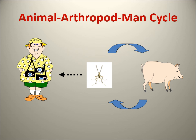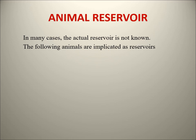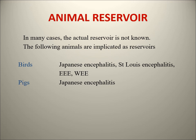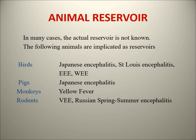Animal reservoirs - in many cases we don't know the actual reservoir, but a few have been identified. Birds serve as the flying reservoir for Japanese Encephalitis. The reservoir is where the virus stays in a reserve form when the transmission cycle is not active. When the mosquito breeding season comes, vectors take the virus from the reservoir and the cycle starts again. The reservoir hosts carry no clinical symptoms but maintain the virus. Birds and pigs are both reservoirs for Japanese Encephalitis - pigs are very important amplifiers. Monkeys are reservoirs for Yellow Fever, and rodents for Russian Spring-Summer Encephalitis.